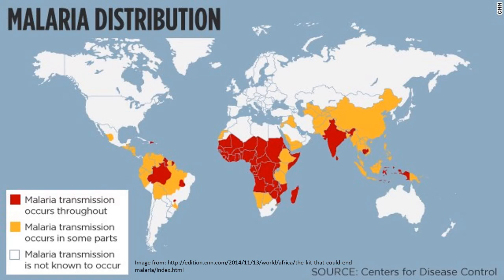Here is a world map from the Center for Disease Control in the US showing how malaria is distributed globally. In sub-Saharan Africa there is a high incidence of malaria, except notably in South Africa — which also correlates with sickle cell anemia being less common there. Malaria is also present in South America and in some regions of Asia.